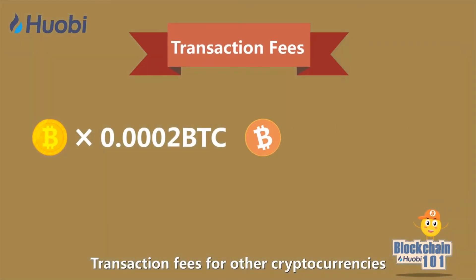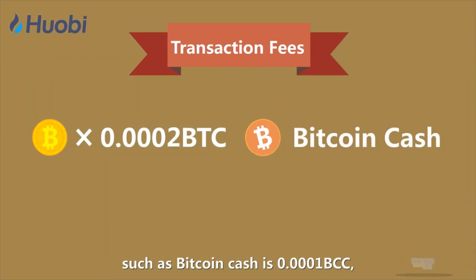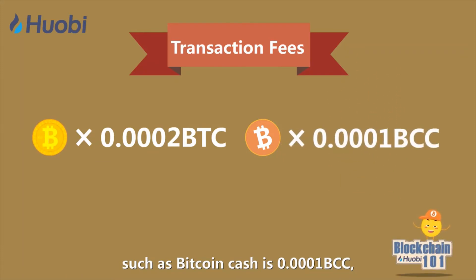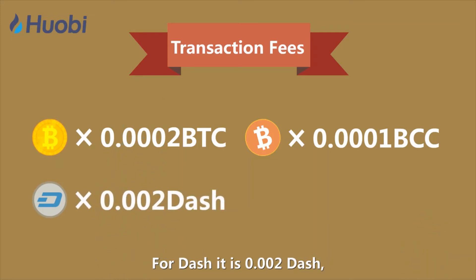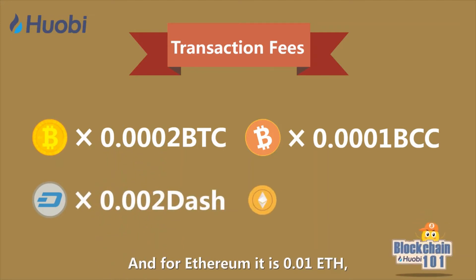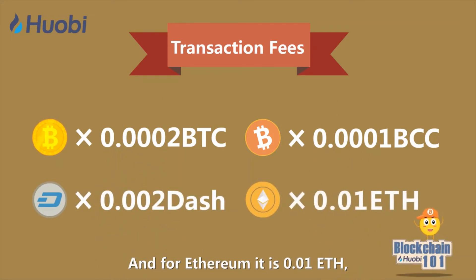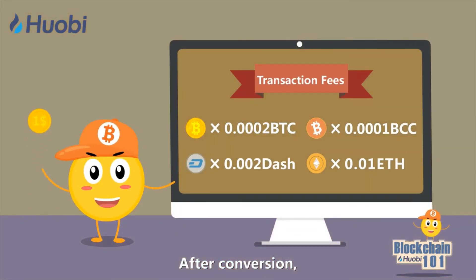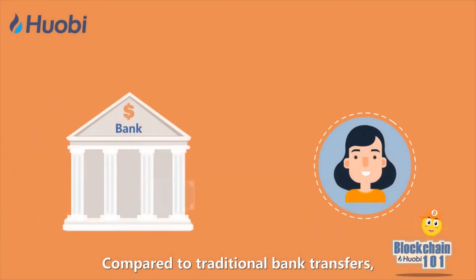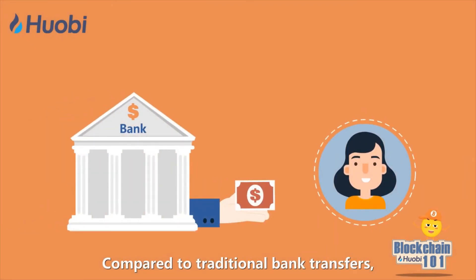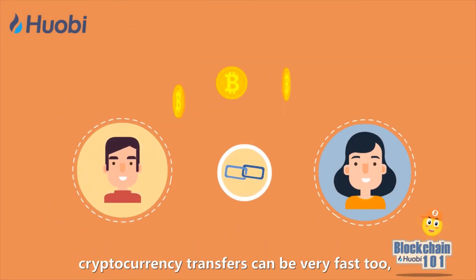Transaction fees for other cryptocurrencies such as Bitcoin Cash is 0.0001 BCC, for Dash it is 0.002 Dash, and for Ethereum it is 0.01 ETH. After conversion, it costs only a few dollars compared to traditional bank transfers.